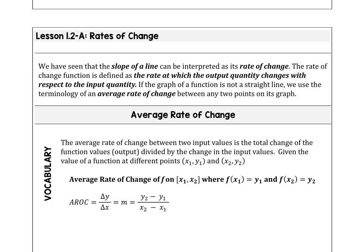Let's get started by looking back to Algebra 1 and Algebra 2. We know from the past that we can say the slope of a line is interpreted as its rate of change. The rate of change function can be defined as the rate at which the output quantity changes with respect to the input quantity. The graph of a function is not a straight line and we like to use the terminology of average rate of change between any two points on its graph.